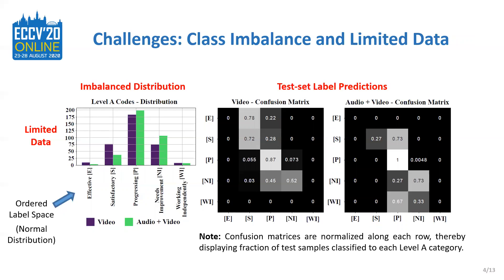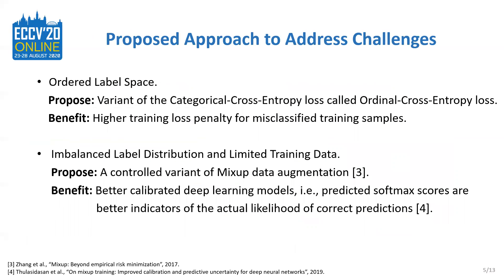Data balancing and data augmentation techniques are useful to address these types of challenges. Please note that the label space in our problem exhibits an ordered structure and the distribution is similar to a normal distribution, which is quite common to observe for this kind of data. Knowing that our label space exhibits an ordered structure, we propose a variant of the regular categorical cross-entropy loss and call it the ordinal cross-entropy loss. This variant helps impose a higher penalty on misclassified samples during training. To address the limited training data and imbalanced label distribution challenges, we propose using a controlled variant of the popular mix-up data augmentation technique, as deep learning models are better calibrated and trained with samples generated using mix-up.